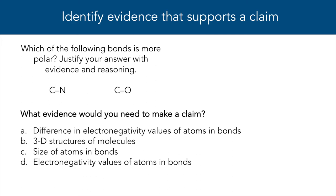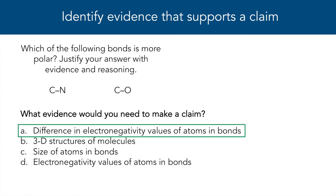The correct evidence is relevant to the claim because we can determine the polarity of the bond by comparing the electronegativity values of the atoms in the bonds. Evidence about the overall 3D structure wouldn't be too helpful as we make claims about the polarity of bonds. Polarity is about the relative distribution of electron density across a bond, so atom size doesn't really play much of a role here. Though we do need to know the electronegativity values, these on their own don't really tell us very much about the polarity of the bonds. So where we can start is by looking at the electronegativity values for each atom and the difference in electronegativity for each bond.